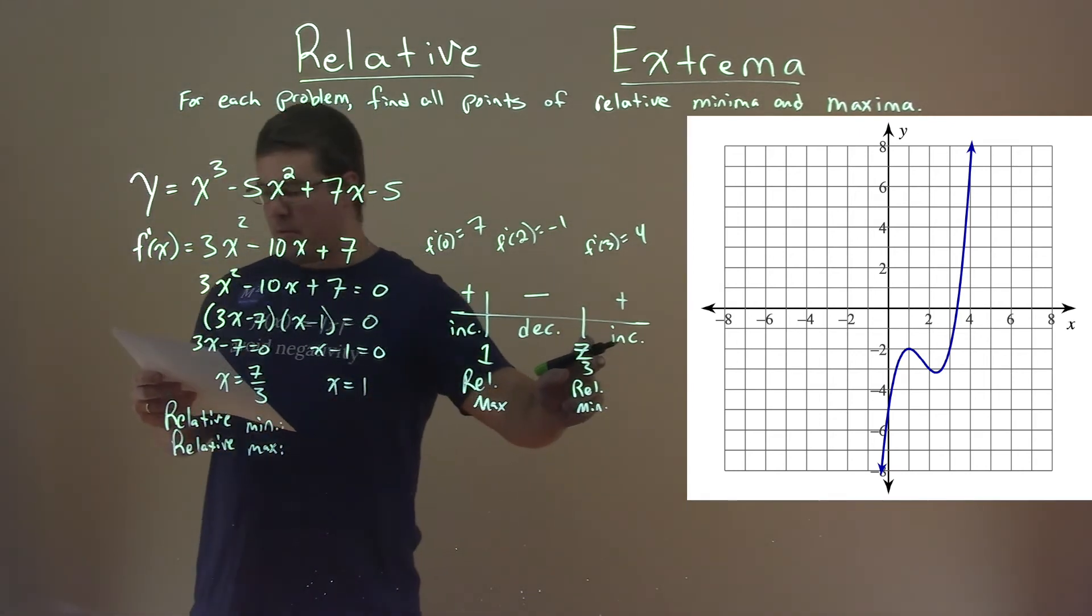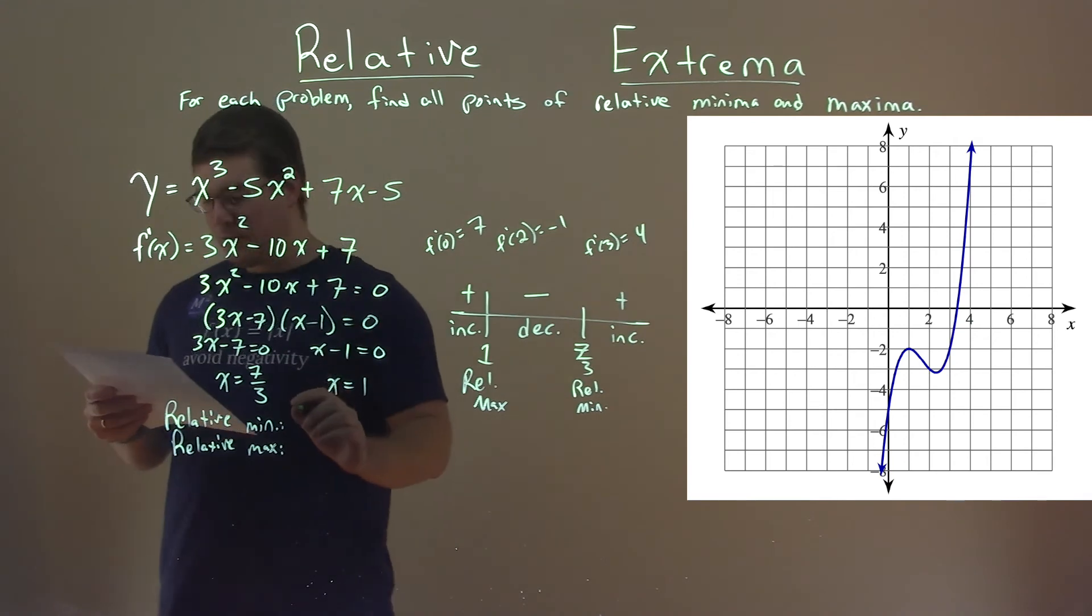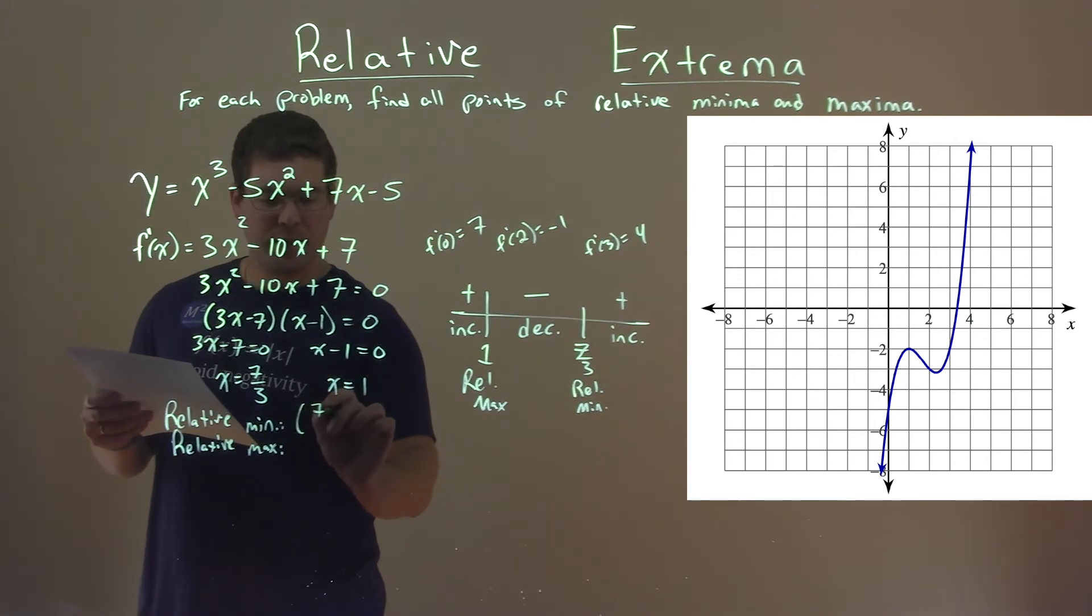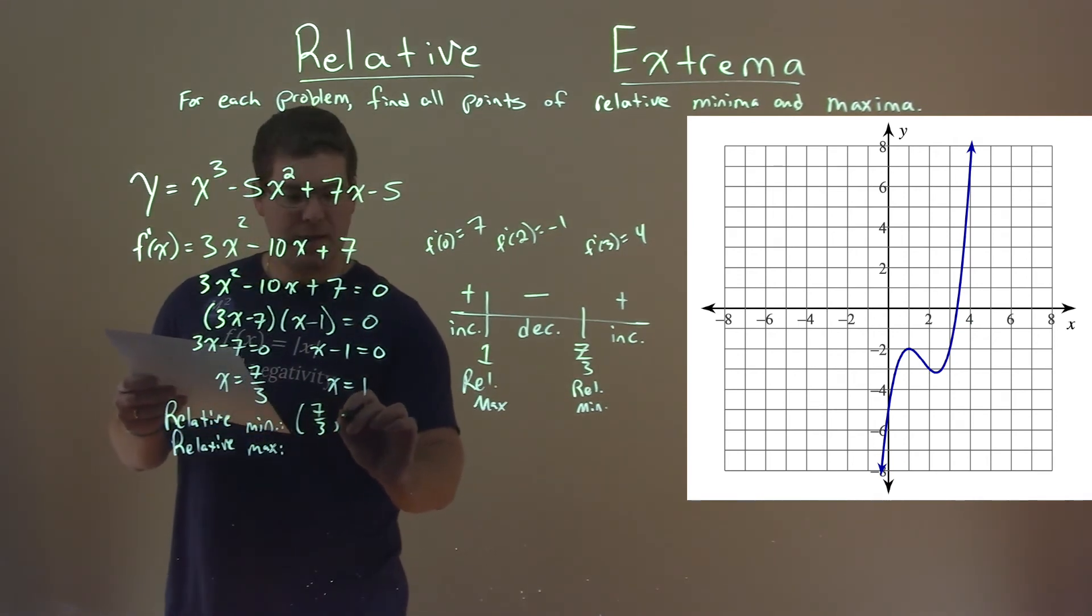Relative minimum: I took 7 thirds, I plugged it into my original function to get the coordinate point, and that's 7 thirds comma negative 86 over 27.